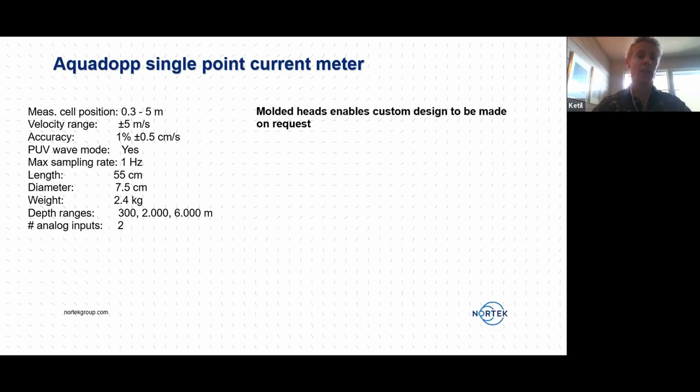The other advantage of a narrow band system is that you don't need to be concerned with the expected velocities. This instrument measures equally well for slow and for fast velocities up to 5 meters per second along the beams. And it can be used for wave measurements in combination with the currents.